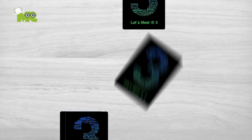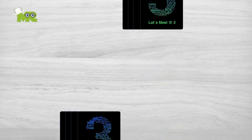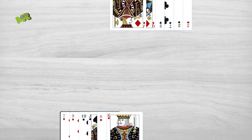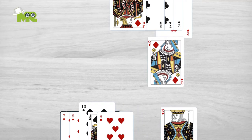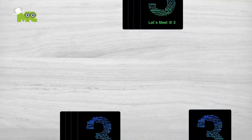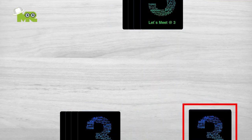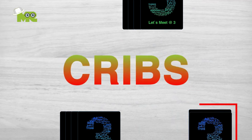The deck is reset and the dealer deals six cards to each player. Each player looks at their hand and chooses two cards that are removed from the game. These cards are placed face down on one side and they're called cribs.